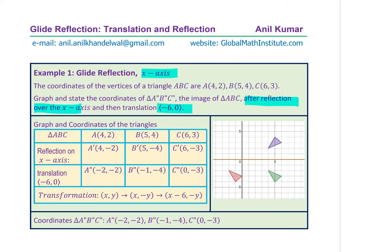So moving left means moving along the x-axis, which makes the definition of glide reflection absolutely clear. Here is the diagram illustrating the whole process. The triangle ABC has coordinates A(4,2), B(5,4), and C(6,3) as shown in the graph. We are reflecting this triangle on the x-axis as the first process. So this is the x-axis on which we are going to reflect, and that is the first operation.